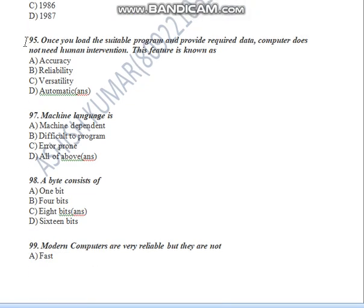Question Number 95: Once you load the suitable program and provide required data, the computer does not need human intervention. This feature is known as automatic — it is also called automation. That means work that happens in the computer without human intervention. This is how super computers and artificial intelligence work — the computer begins making decisions on its own.